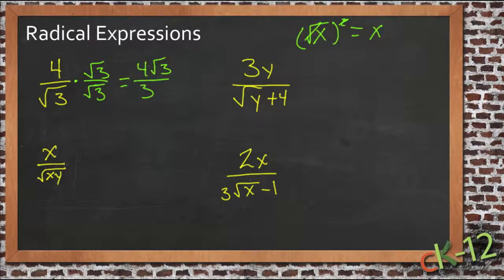If we take a look at the second one here, we have x over root xy, so we need to multiply the top and bottom by root xy. And now we have the square root of xy squared, so the square and the square root cancel, we have just xy in the denominator.